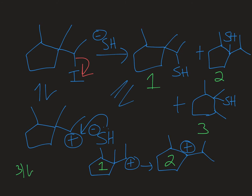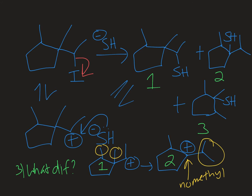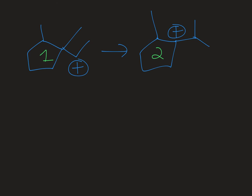The third step is to figure out what is different between those two reactive intermediates, because that tells you what shifted. Looking at the original carbocation, I have a methyl, a methyl, and an ethyl group. But in carbocation two, the methyl is gone from that carbon and instead I end up with an isopropyl group. So what happened is a methyl shift — the methyl shifts off of that carbon onto the carbocation, leaving the original carbon electron deficient and generating carbocation two. The methyl moves over to the other side, creating the isopropyl group.